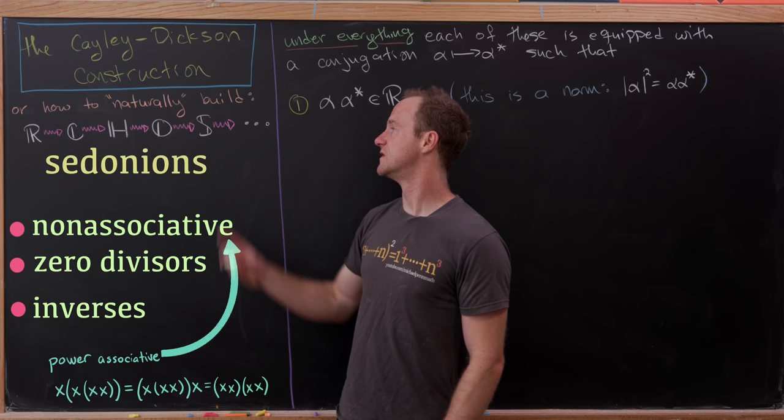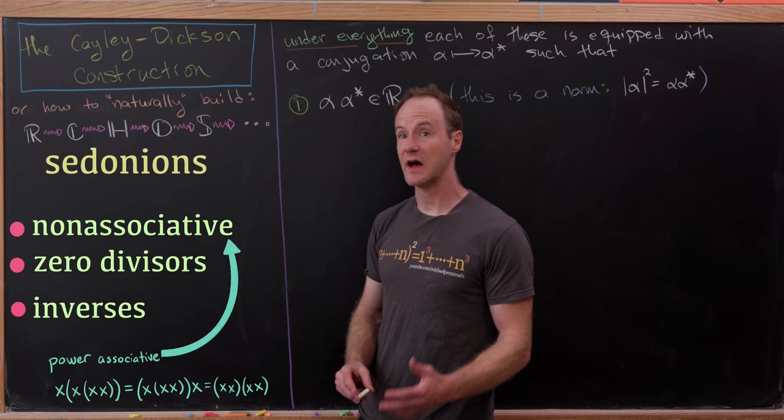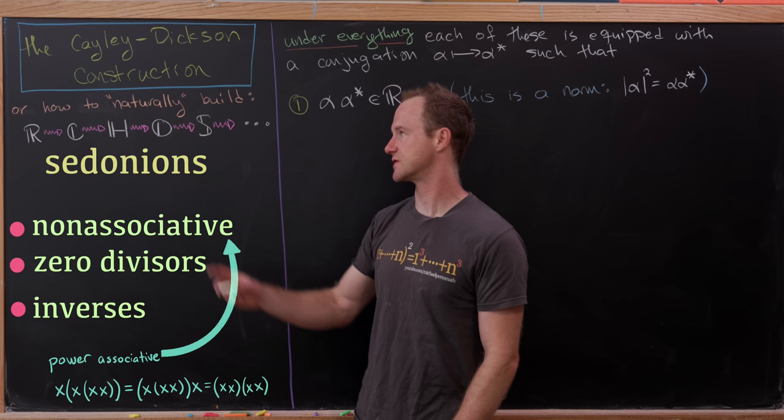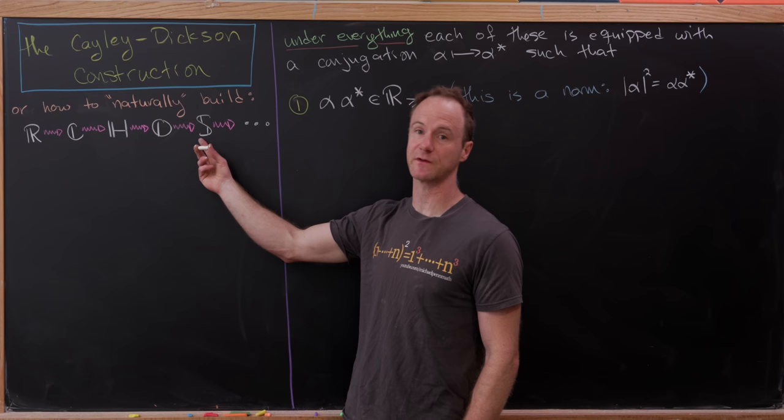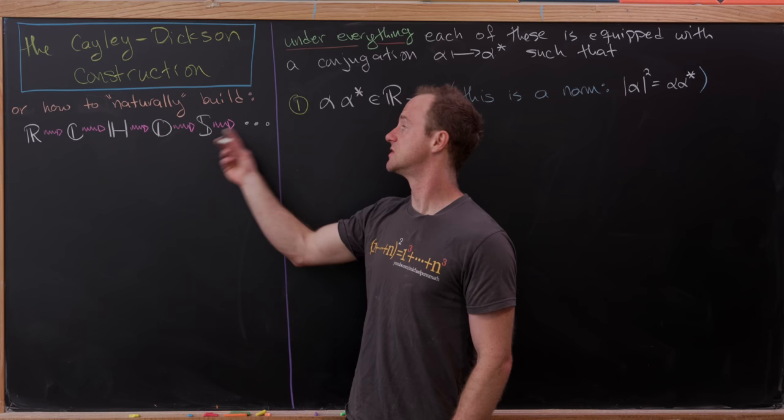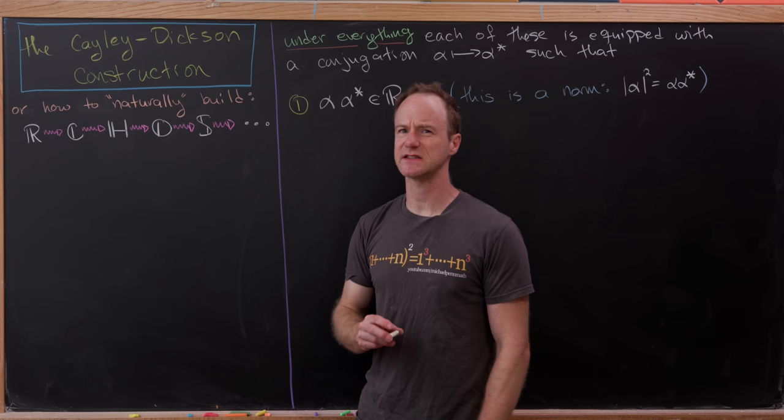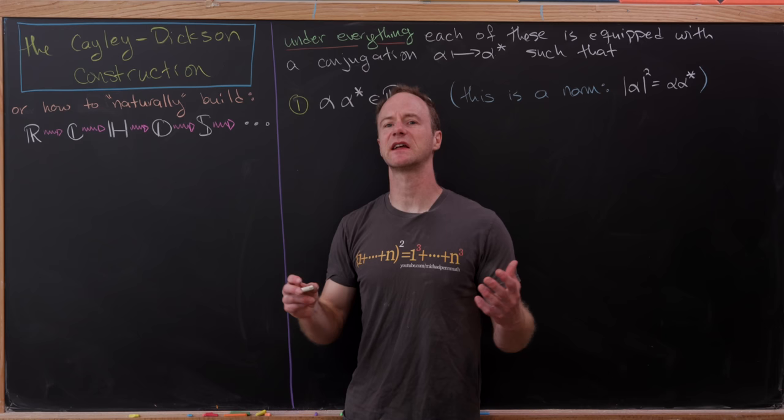I've got a whole video on zero divisors if you'd like to check that out. The sedenions are not an alternative algebra, but everything still has an inverse, but there are also zero divisors. That kind of thing is impossible from here to the left, but it's totally possible from the sedenions to the right. And to the right, you always get zero divisors even though everything has an inverse, and you only get something called power associativity. But that's really a big view of what's going on.